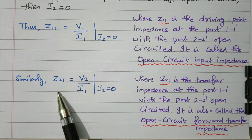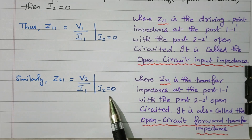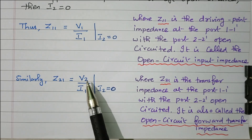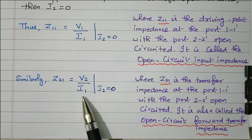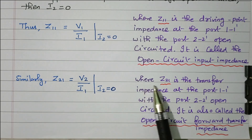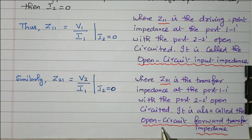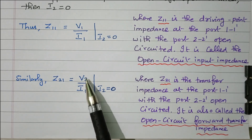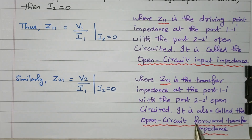Another parameter, Z21, equals V2 divided by I1, with I2 equal to zero — the output port is open-circuited. This is the output port voltage divided by the input port current. Z21 is the transfer impedance at port 1-1' with port 2-2' open-circuited. It is also called the open circuit forward transfer impedance, as we are referring output port voltage to input port current.